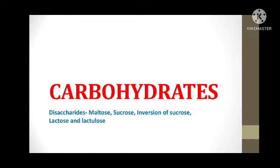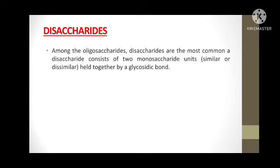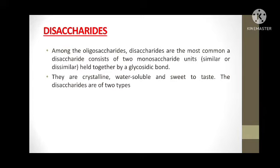In this class I am going to discuss about disaccharides with suitable examples. Disaccharides are a type of oligosaccharides, which contain 2 to 10 monosaccharide units. Disaccharides consist of 2 monosaccharide units which are either similar or dissimilar, held together by a glycosidic bond. Disaccharides are crystalline in nature, water soluble and sweet to taste.